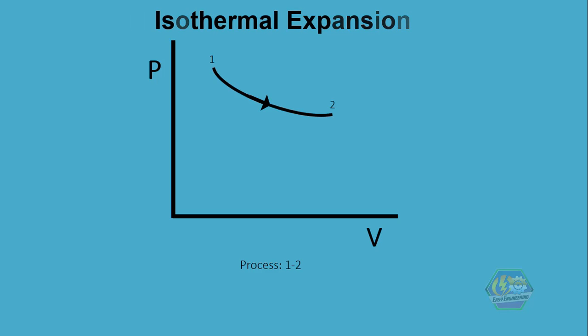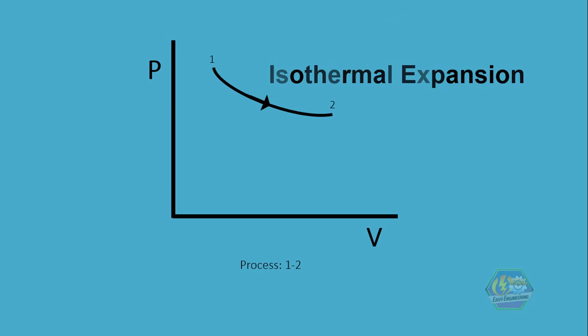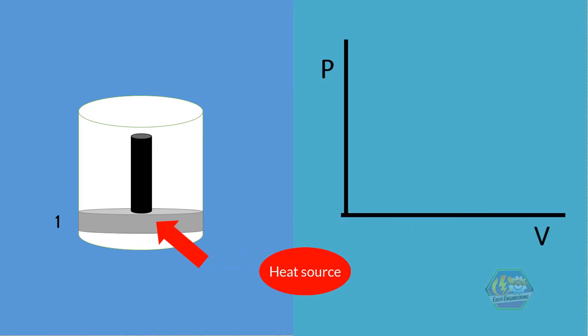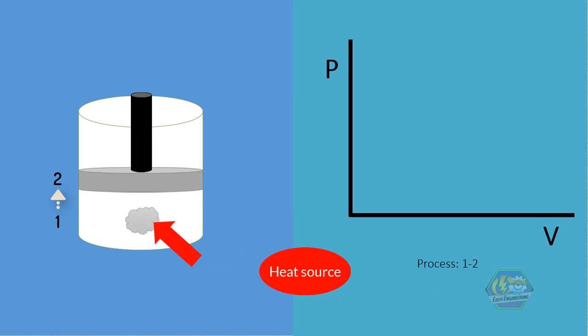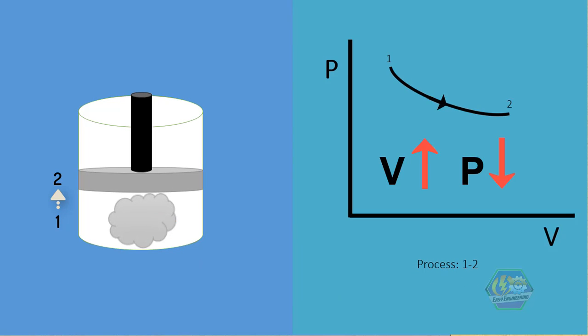Temperature is constant or not changing within this process. Heat energy from the heat source is transferred into the ideal gas. As a result, the gas expands, which increases the volume and decreases the pressure.